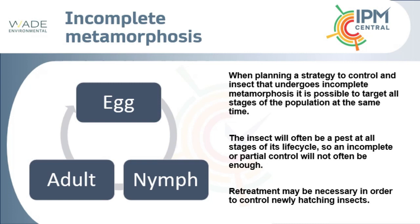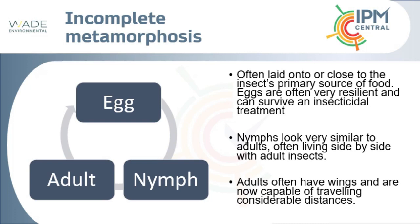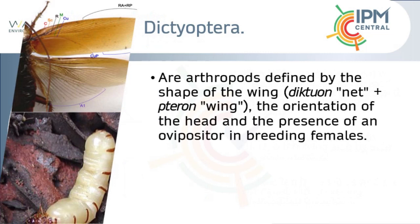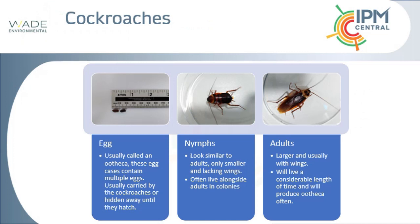Animals that go through complete metamorphosis go from egg to larva, then pupae to adult — four stages. When planning a strategy to control an insect with complete metamorphosis, you need to pay attention to both the larval and adult stages, because they look and act completely differently. Flies are the easiest example: the larval stage is a maggot, the adult stage is a fly. The larva is the resource-gathering stage — eating and contaminating the food source.